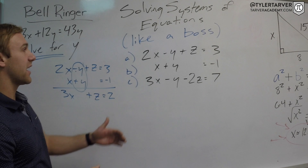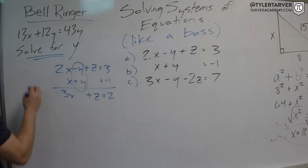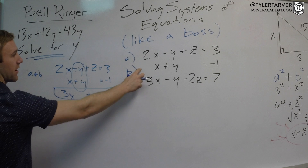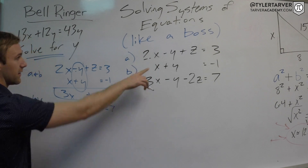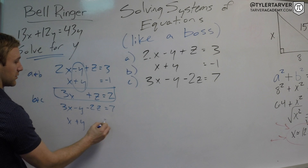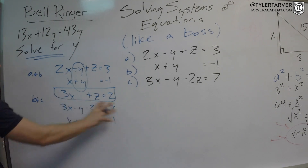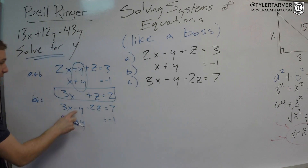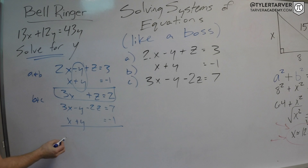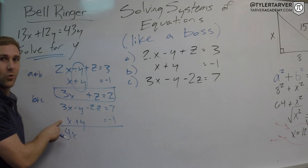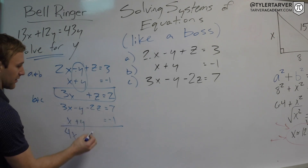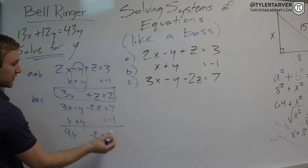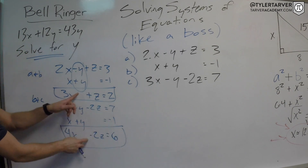Now I need to do the same thing with another pair — B and C. I write C on top since it's longer, then x plus y equals negative 1 underneath. I don't need to multiply anything because the y terms are already opposites. 3x plus x is 4x — don't forget there's always a 1 in front of that x. Those y's cancel out, giving negative 2z, and 7 plus negative 1 is 6. So I get 4x minus 2z = 6.